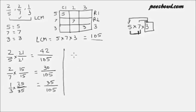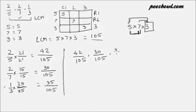Now let us write the new values of these fractions. First, we have 42 upon 105. The second fraction, 2 upon 7, is nothing but 30 upon 105. The third fraction, 1 upon 3, is 35 upon 105. Now we have the same denominator in all three fractions, so in order to find out which fraction has the highest value, we look at only the numerator. In this case, 42 has the highest numerator value, meaning 42 upon 105 has the highest fraction value.